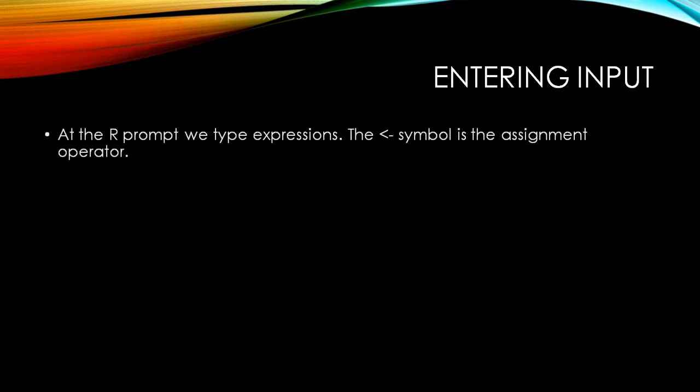So how do we enter the input? This is very simple. When we have an R prompt, we type the expressions. The symbol that looks like a left arrow is actually a less-than symbol followed by a hyphen, and this is called the assignment operator.